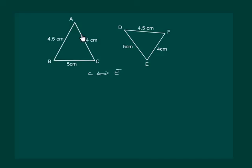Now let us look at vertex A. 4 cm length and 4.5 cm length are meeting at A. So let us find the vertex which should correspond to A. Clearly, at vertex F, 4 cm length and 4.5 cm length are meeting. So that would mean that A should correspond to F.